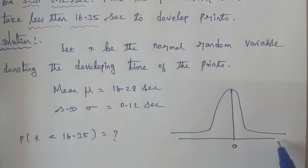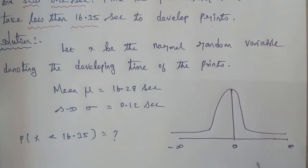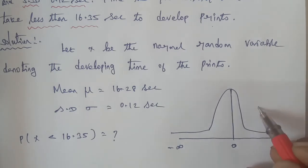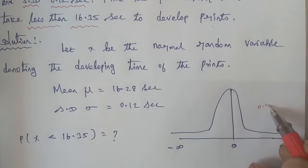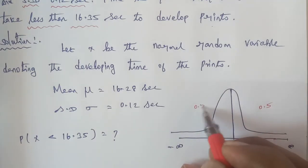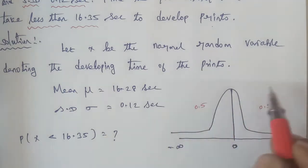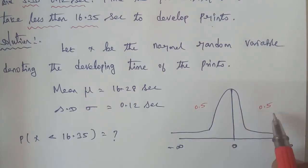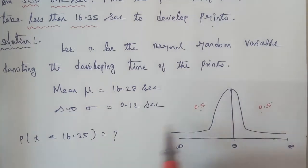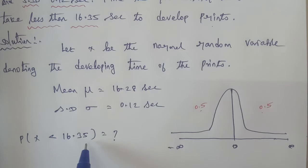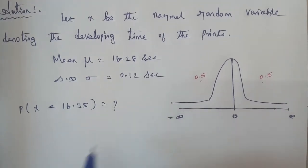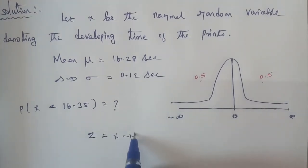The total area under the normal distribution curve is 1. From minus infinity to zero, the area is 0.5, and from zero to infinity, the area is also 0.5, giving a total area of 1. The Z-score formula for the normal distribution is Z = (X − μ) / σ.